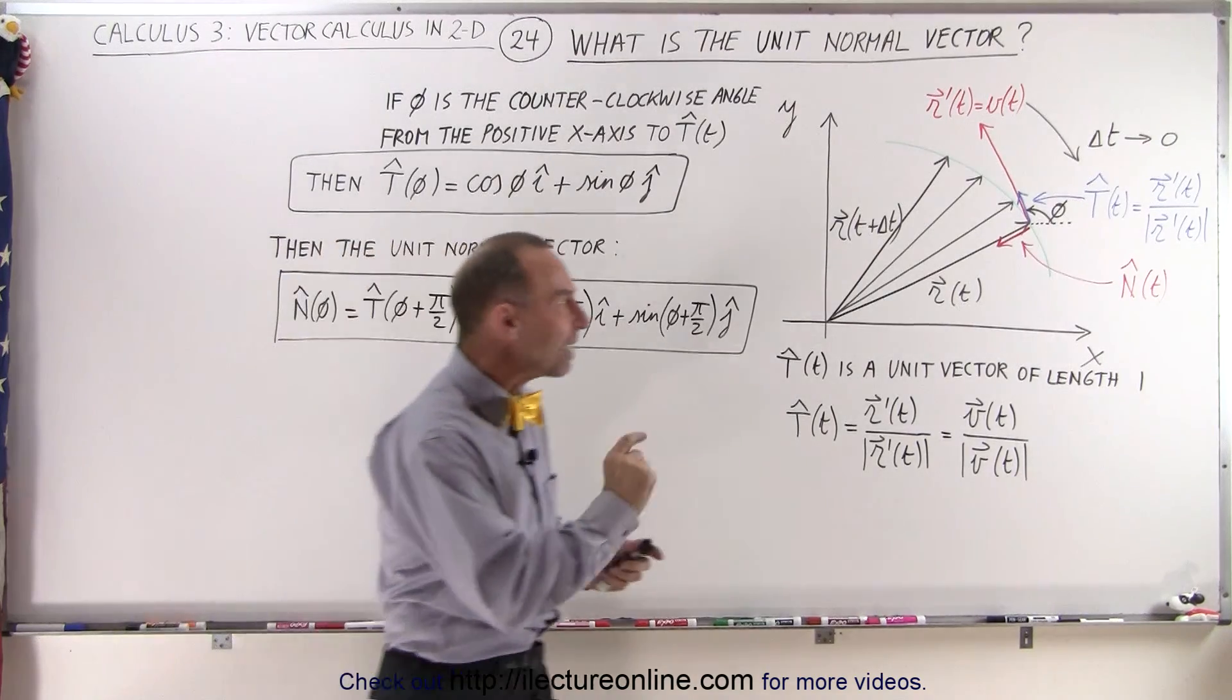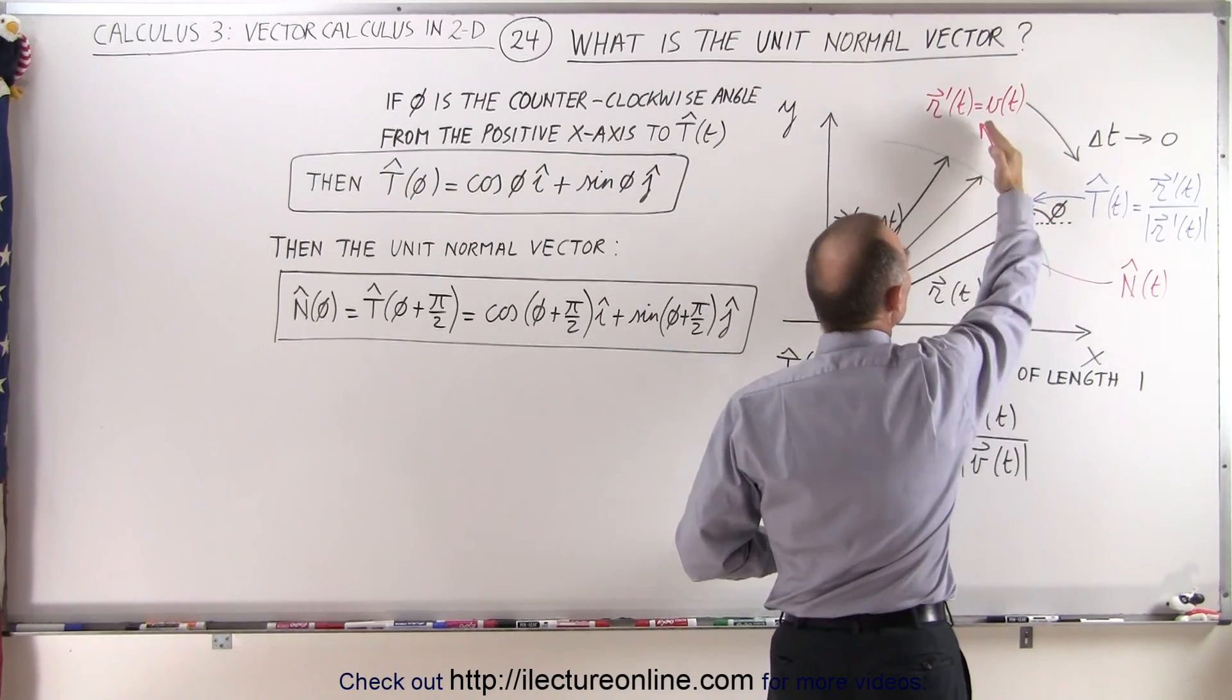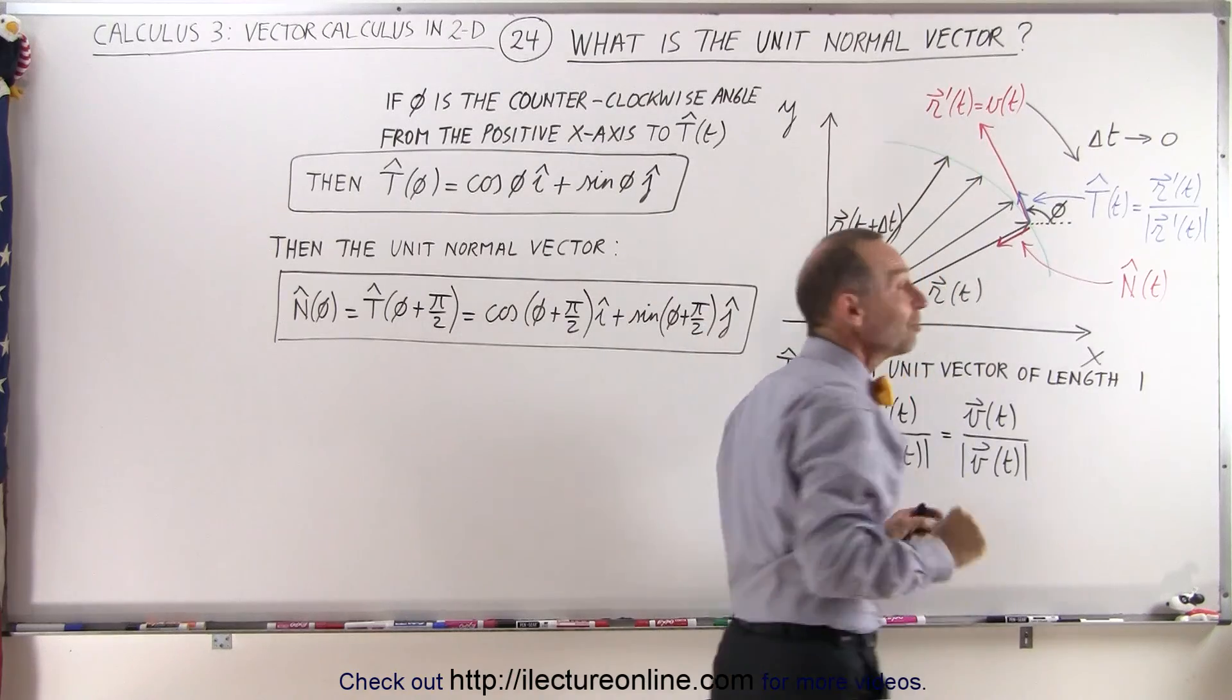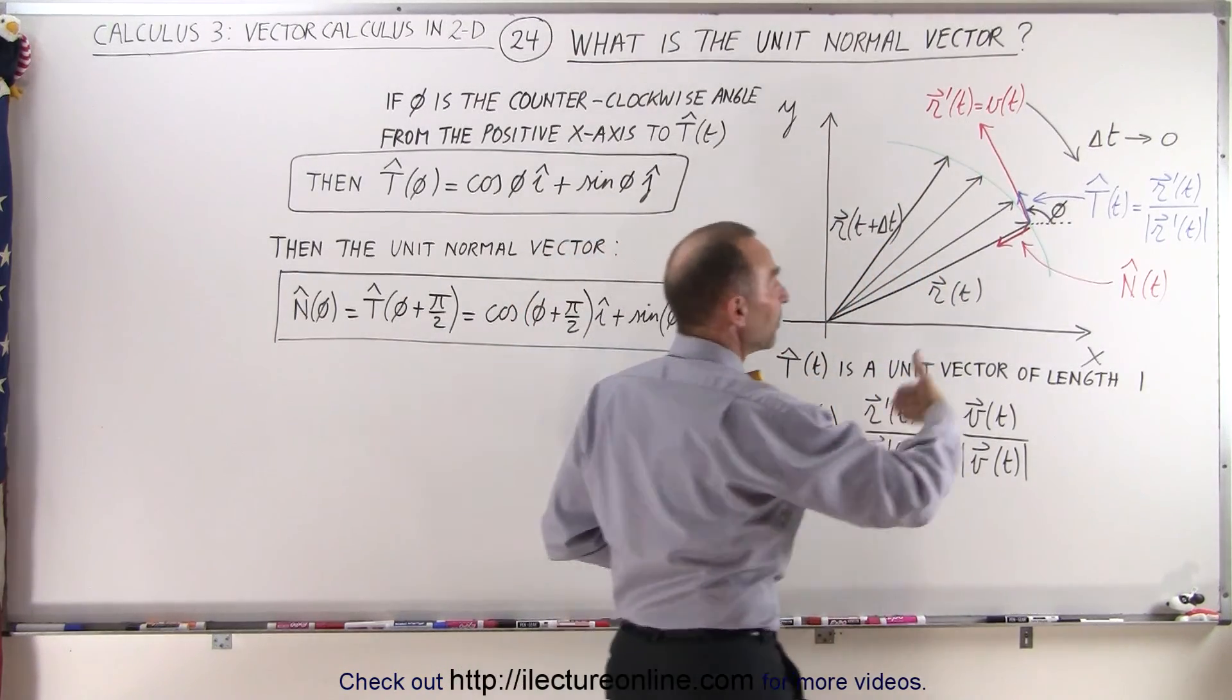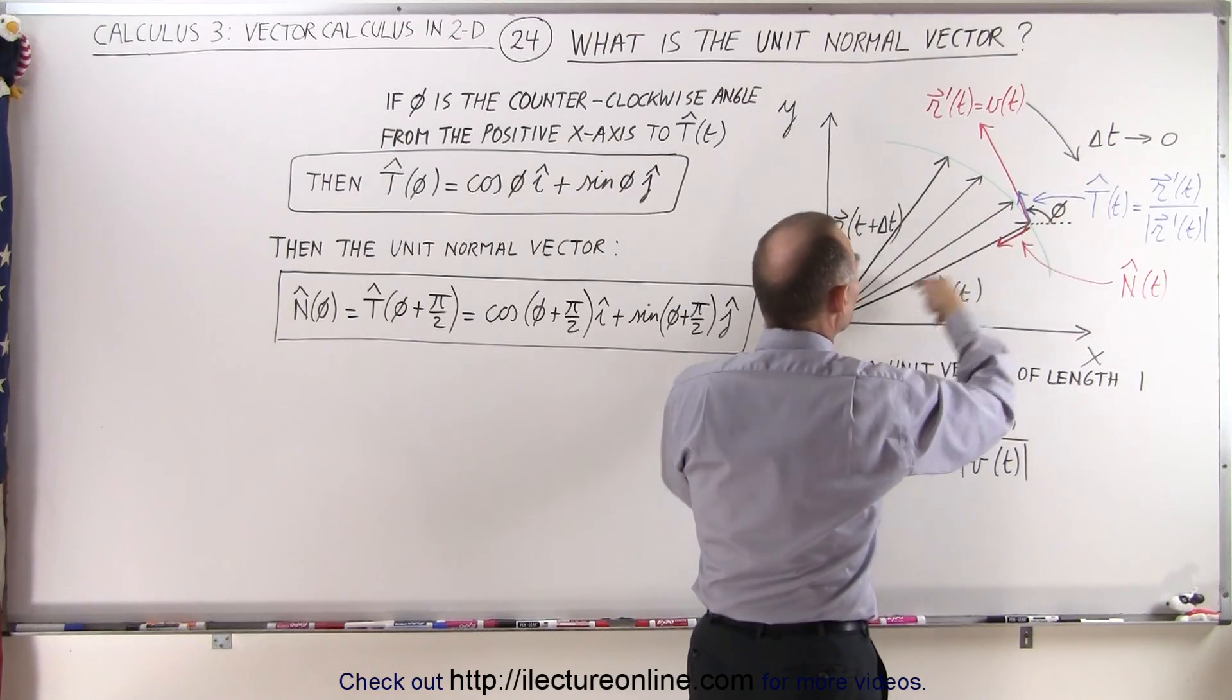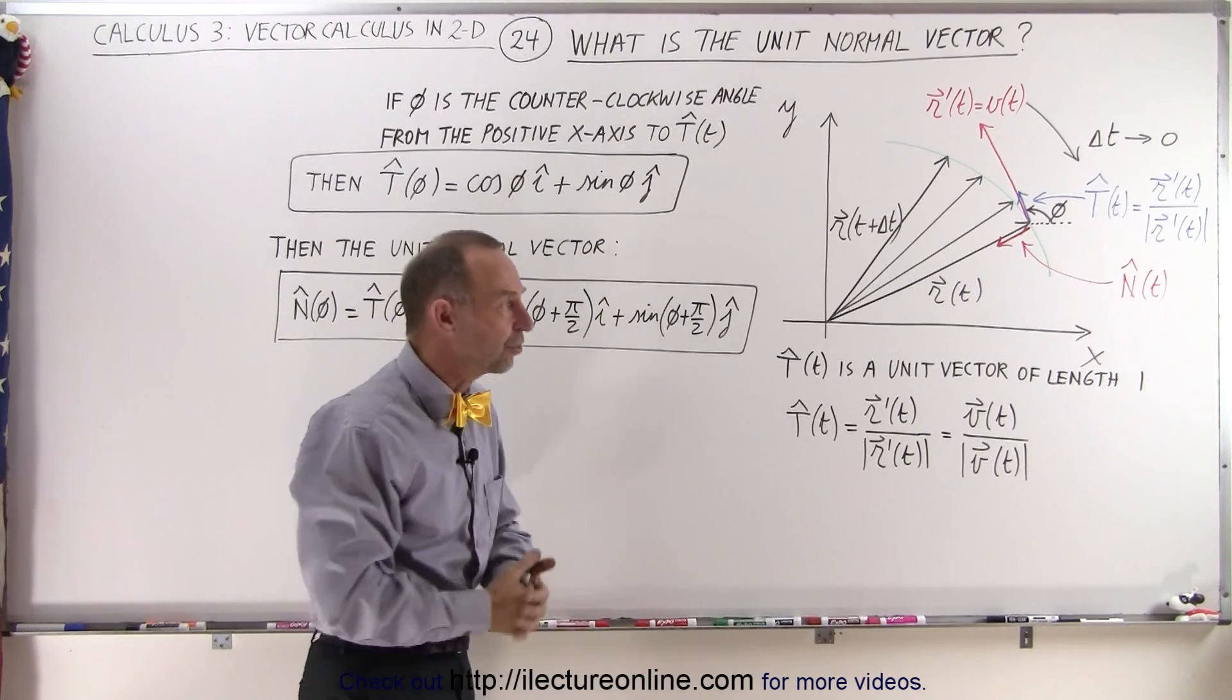Well, the unit tangent vector was a vector of length one unit in the same direction as the derivative of the position vector, which represented the velocity of a particle if the parametric variable was time and the position of the particle was defined by the position vector at time equals t.